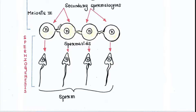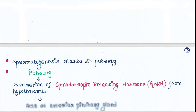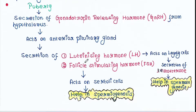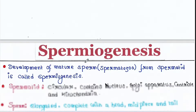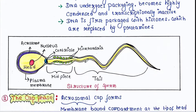Spermatid is circular. It contains nucleus, Golgi apparatus, centriole and mitochondria. Sperm is elongated, and it is composed of head, midpiece and a tail.